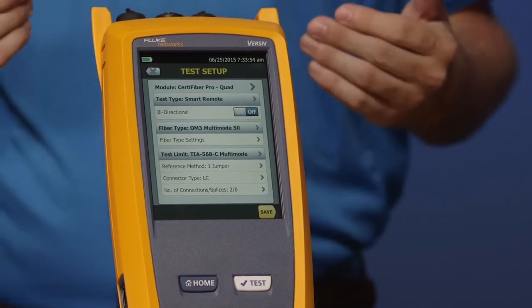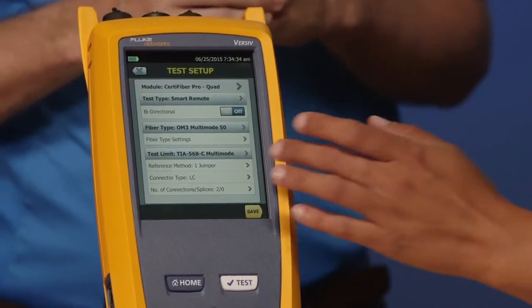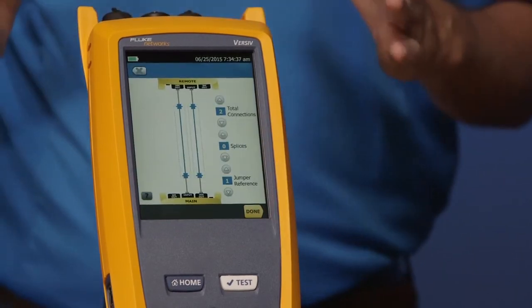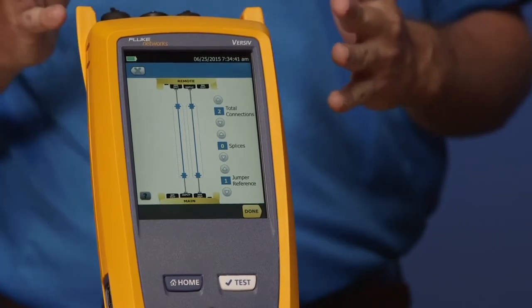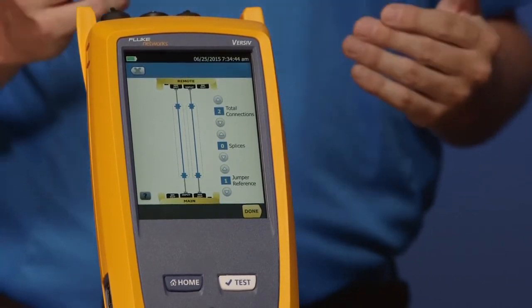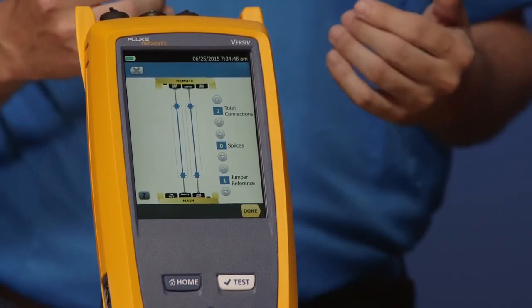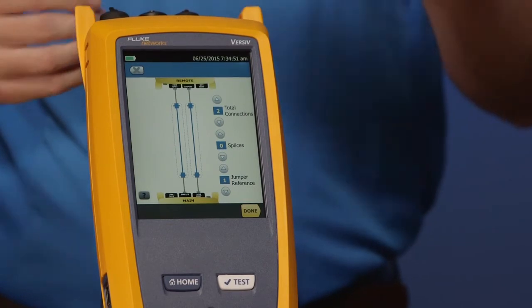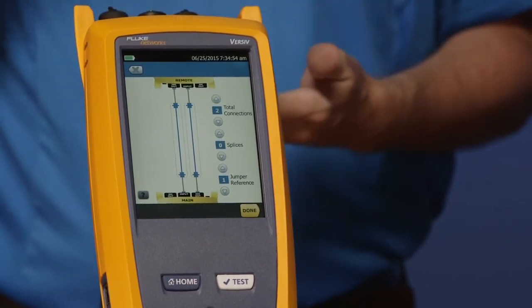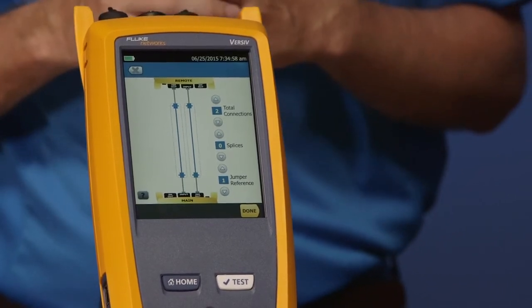So our next option on here, Amanda, is our reference method type. This has to be the most single cause of phone calls coming into the technical assistance center. If you are certifying a cabling system for a warranty and you're going from patch panel to patch panel, you should be doing the one jumper reference. Failing to do a one jumper reference can result in the rejection of your cabling warranty. Go ahead and tap that one jumper reference for me. Now we've somewhat simplified this compared to our previous tester, the DTX. So everything is on one screen here. So now here we can put our jumper method, the number of connections, and the number of splices. And because we selected the TIA limit, when we increase the number of connections on here, that's going to increase our loss budget. It's going to increase our test limit. So this is a very important screen to get right here.